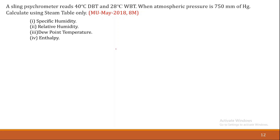While solving any numerical, first of all we note what is given. We denote dry bulb temperature by TD and wet bulb temperature by TW. So TD is 40 degrees Celsius and TW is 28 degrees Celsius. Atmospheric pressure P is equal to 750 mm of mercury. When we solve the numerical, we deal with pressure in bar, so first we have to convert this atmospheric pressure into bar.